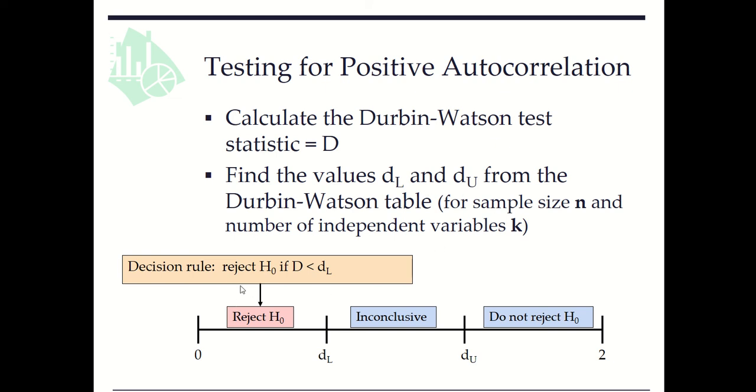The decision rule is to reject H₀ if D < dL, and do not reject H₀ if D > dU. If D is between dL and dU, then the result is inconclusive.